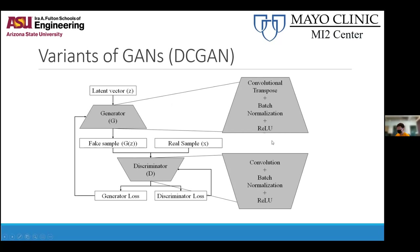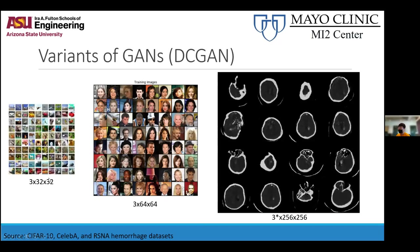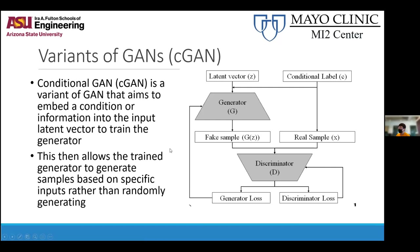DC GANs really comes down to three aspects: convolutional transpose and convolutions, batch normalizations, and ReLU activations. These three pieces, which are very common in regular CNN models, are what made many GAN models more stable in training. DC GANs allowed going from small 32×32 images up to 64×64 or even 256×256.